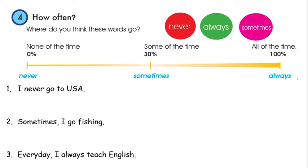Example number three: Every day I always teach English. So teacher is an English teacher — every day teacher always teaches English. Teacher hopes that you understand adverbs of frequency and use them in English correctly.